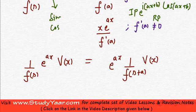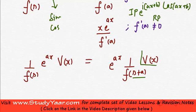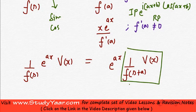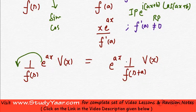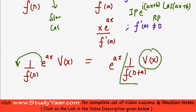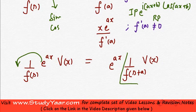Then this is equal to e^(iax) times the inverse operator 1/f(D+a), where a is this guy, operating on the function of x. You can calculate this separately. So, this guy goes outside and you have 1/f(D+a) being operated on v(x).